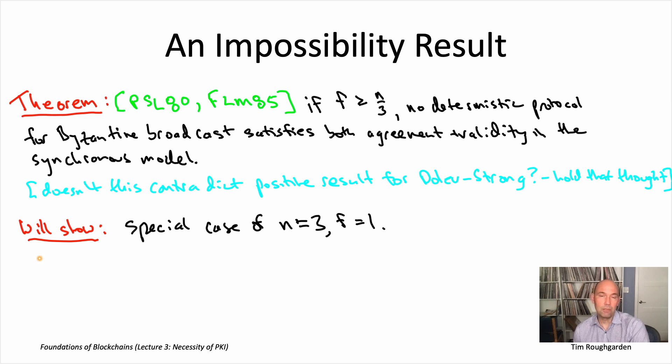Notice that is in the regime where this impossibility result claims to hold. And that probably seems like a ridiculously simple case to focus on, but actually the general case reduces to the case of just three nodes, one Byzantine one.